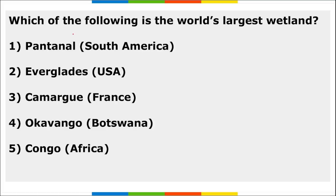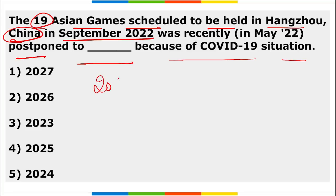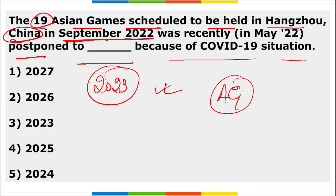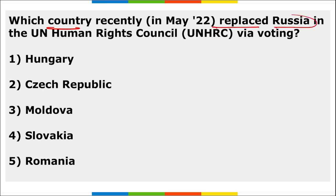The world's largest wetland is the Pantanal, located in South America. The 19th Asian Games, scheduled to be held in Hangzhou, China in September 2022, were postponed to 2023 due to COVID-19. The Olympic Council of Asia also announced cancellation of the third Asian Youth Games that were to be held in China.